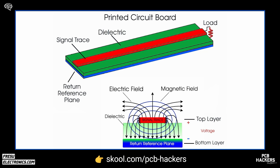The electric field is described by the black arrows and the magnetic field by the blue circles. Of course this assumes that a signal is present on the signal trace. We can observe that the electric field lines are emanating from the signal trace, and their direction changes depending on the position of the trace in relation to the return reference plane. In this PCB where the return reference plane is close to the signal trace, the electric fields generated by the signal trace are naturally drawn towards this plane and terminate there. On the top side of the signal trace, where there is no return reference plane, the electric field lines are partially uncontained.